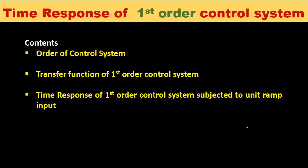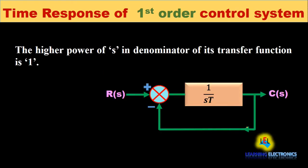We know that the order of the system is the highest power of s in the denominator of the transfer function of the control system. So a first order control system is the system wherein the highest power of s in the denominator of its transfer function is equal to 1.